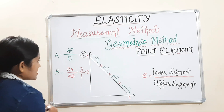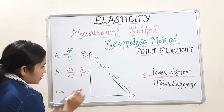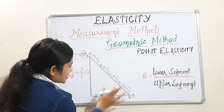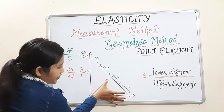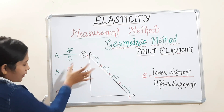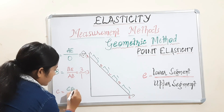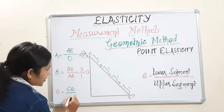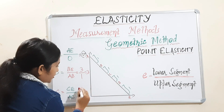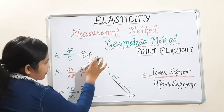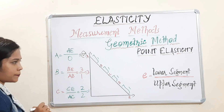Next, we will measure at point C. At point C, the lower part will be CE and the upper part is AC. So the answer will be CE divided by AC. CE is 1 plus 1 = 2, and AC is 1 plus 1 = 2. So 2 divided by 2 equals 1.